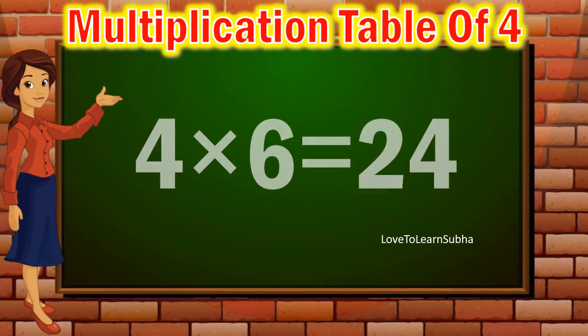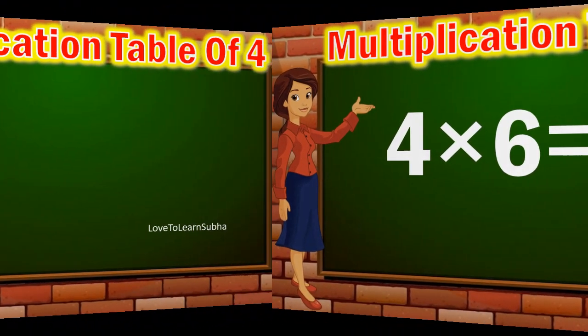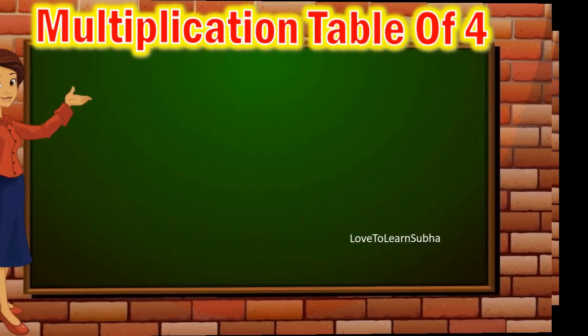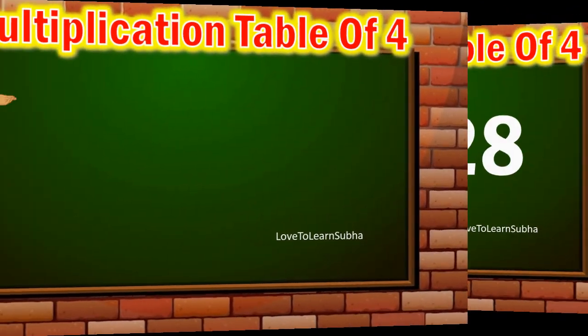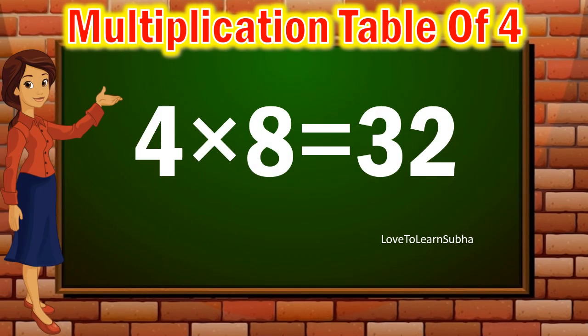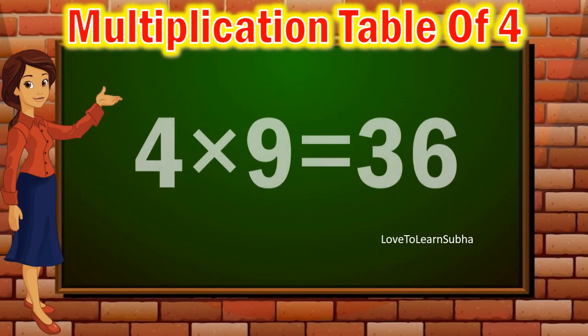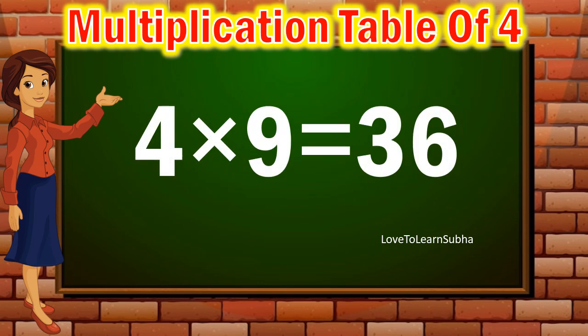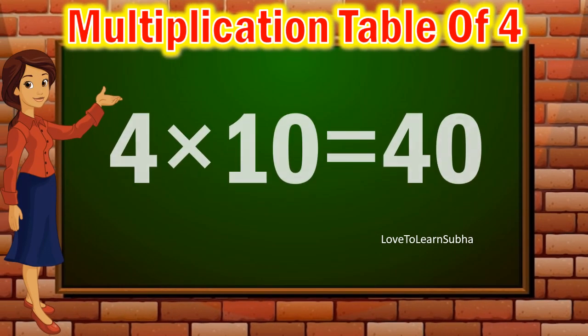4 sixes are 24. 4 sevens are 28. 4 eights are 32. 4 nines are 36. 4 tens are 40.